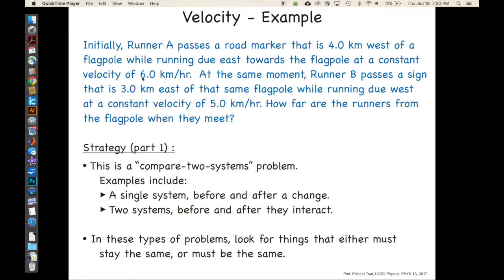Alright, let's do this example that we just started in class, which was the example where we had two runners, one of which is to the west of a flagpole by a certain distance, four kilometers, and is running six kilometers per hour towards the flagpole, while runner B is on the east side of the flagpole running due west at five kilometers per hour. So how far are the runners from the flagpole when they meet each other?